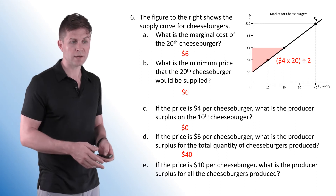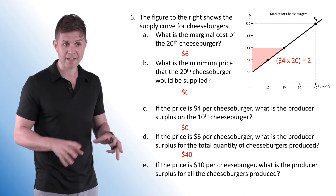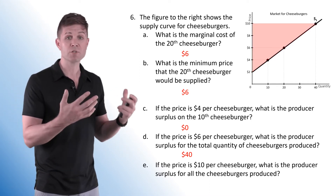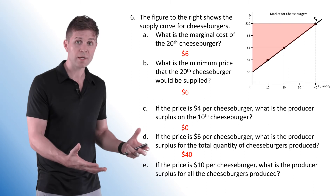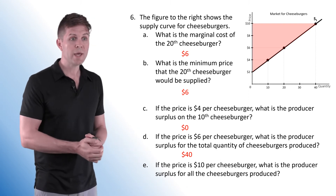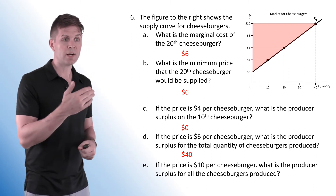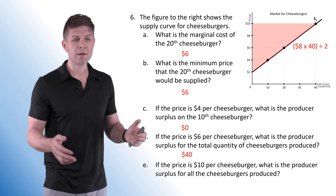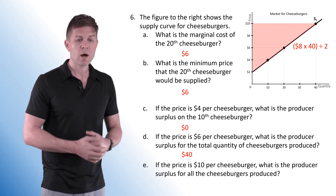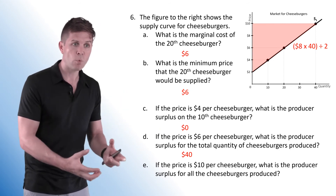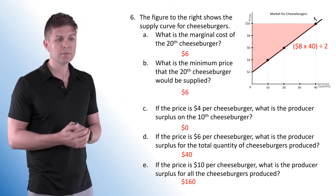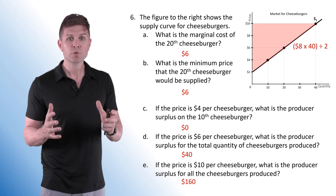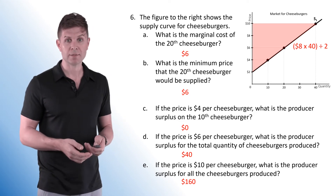If the price of the cheeseburger is $10, the producer surplus covers a much larger area. We have a height of 8 and a base of 40 — the market size is 40. Divided by 2, we have a producer surplus of $160.